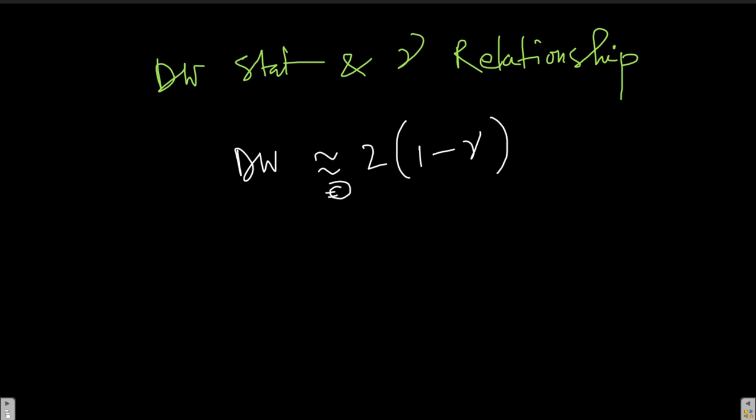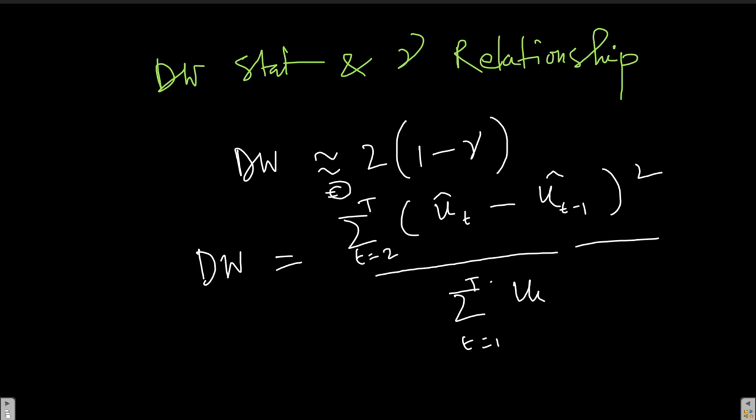So this is just a small video for further explanation. Let's again go back to the Durbin-Watson statistic formula and it is t equals 2 to t, and we have ut minus ut minus 1 whole square, whereas in the denominator I have t equals 1 to t and I have ut hat square.